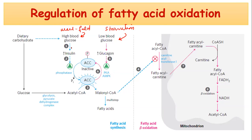In both conditions, your pancreas releases different types of hormones, using blood glucose as a signal. If you are suffering from a starvation condition and your blood glucose level is too low, the hormone released will be glucagon.